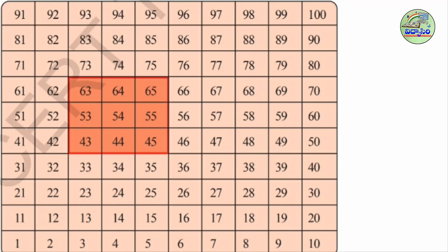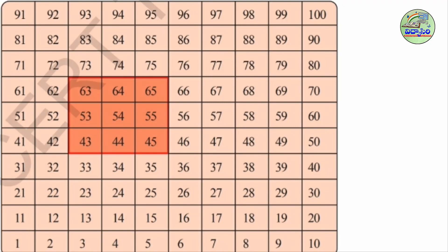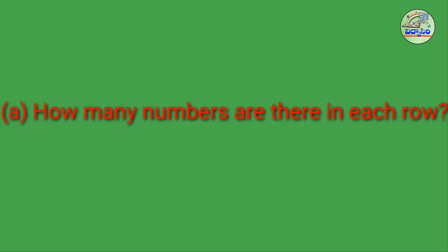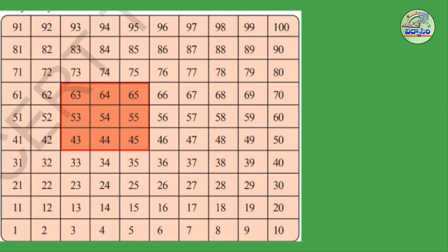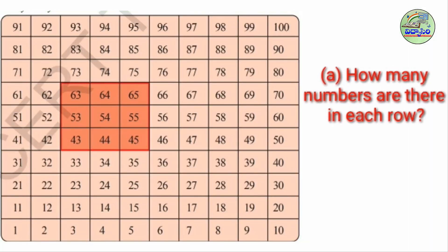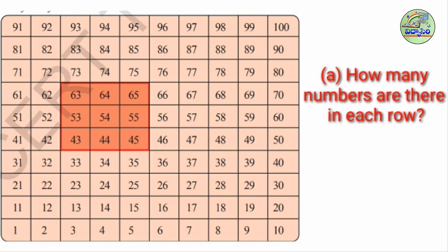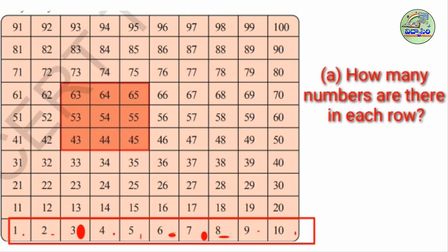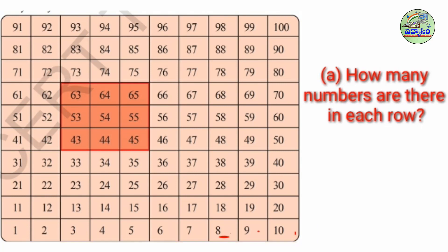I think you observed very well. I will give you some questions on this table. Here, some numbers are arranged in columns. Children, observe this one. How many numbers are there in each row? Row means this one — this is a row. Let me count: 1, 2, 3, 4, 5, 6, 7, 8, 9, 10. There are 10 numbers in this row.